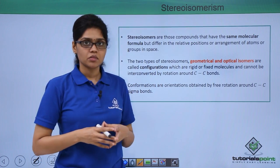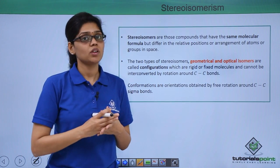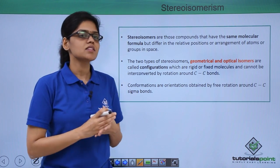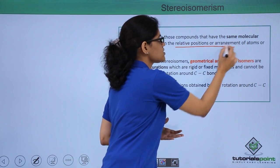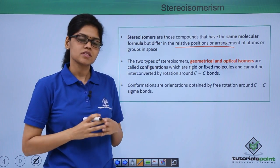Stereoisomers are compounds which have the same molecular formula but they essentially differ in their relative positions or arrangement of atoms or groups in space.